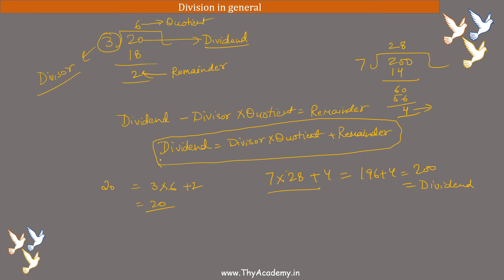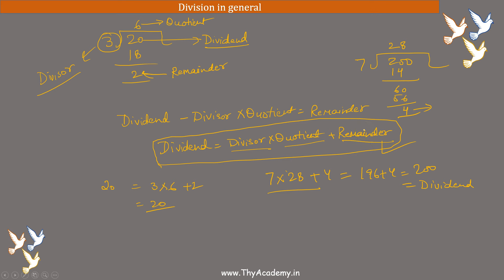So this equation always holds — we can also understand it intuitively. The way we do division, this equation must always hold: dividend equals divisor into quotient plus remainder. Now let's look at division of polynomials. Polynomial division is roughly the same as number division, with some differences because we are dealing with polynomials, not numbers.